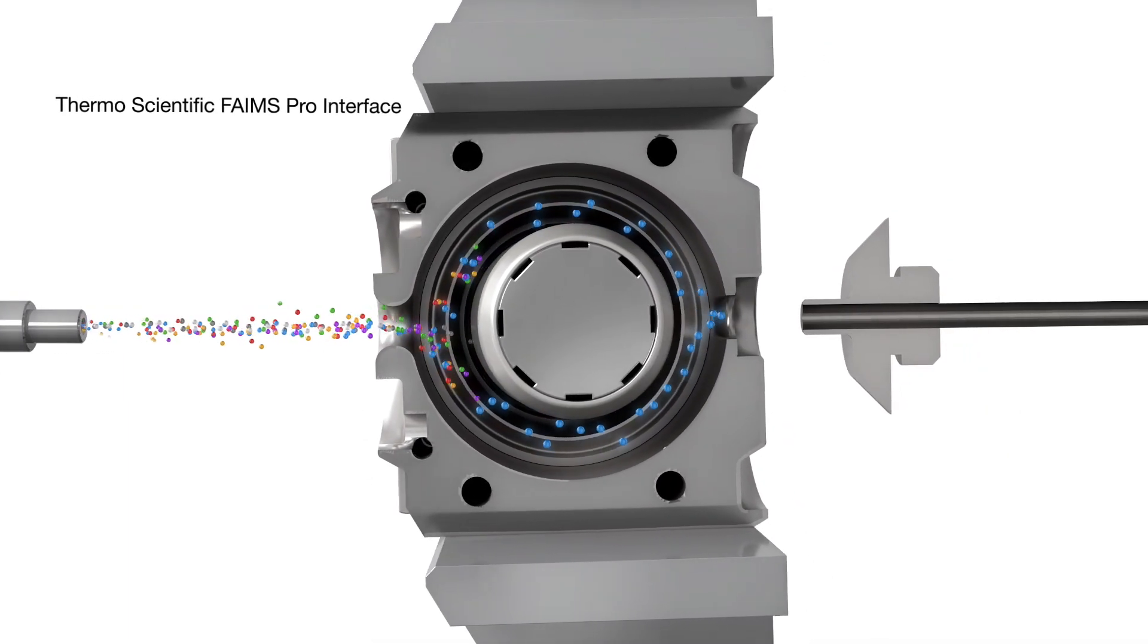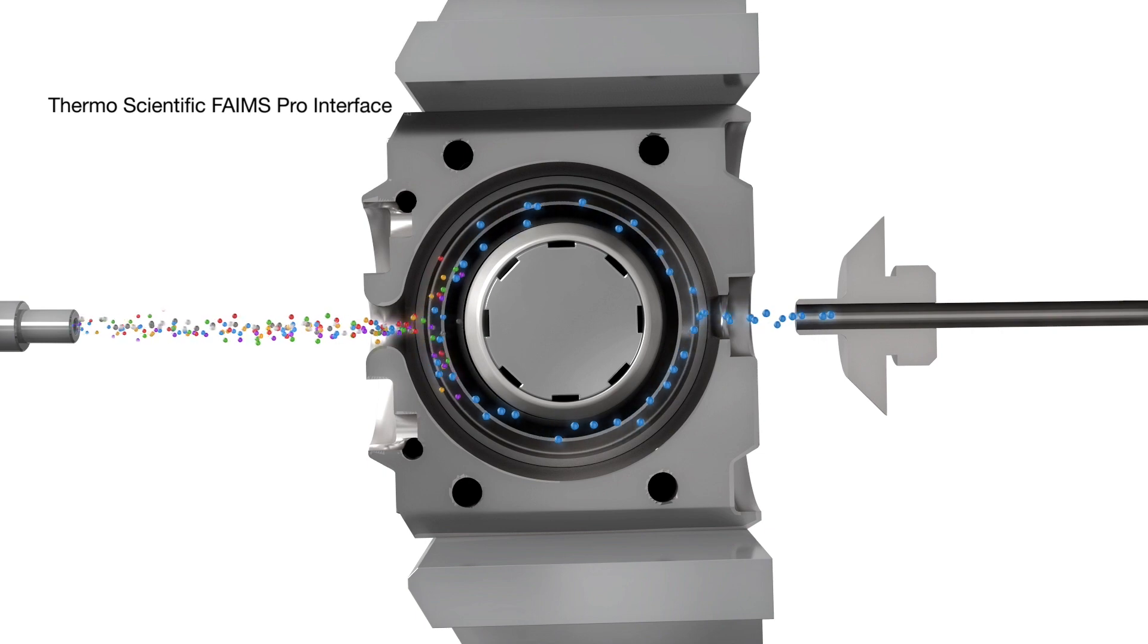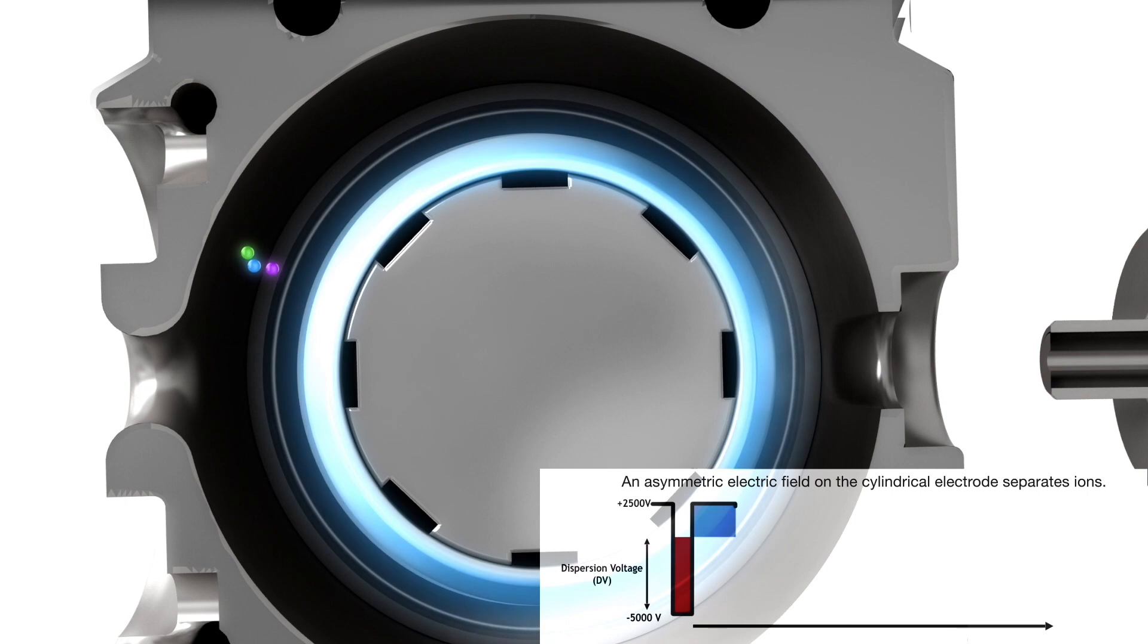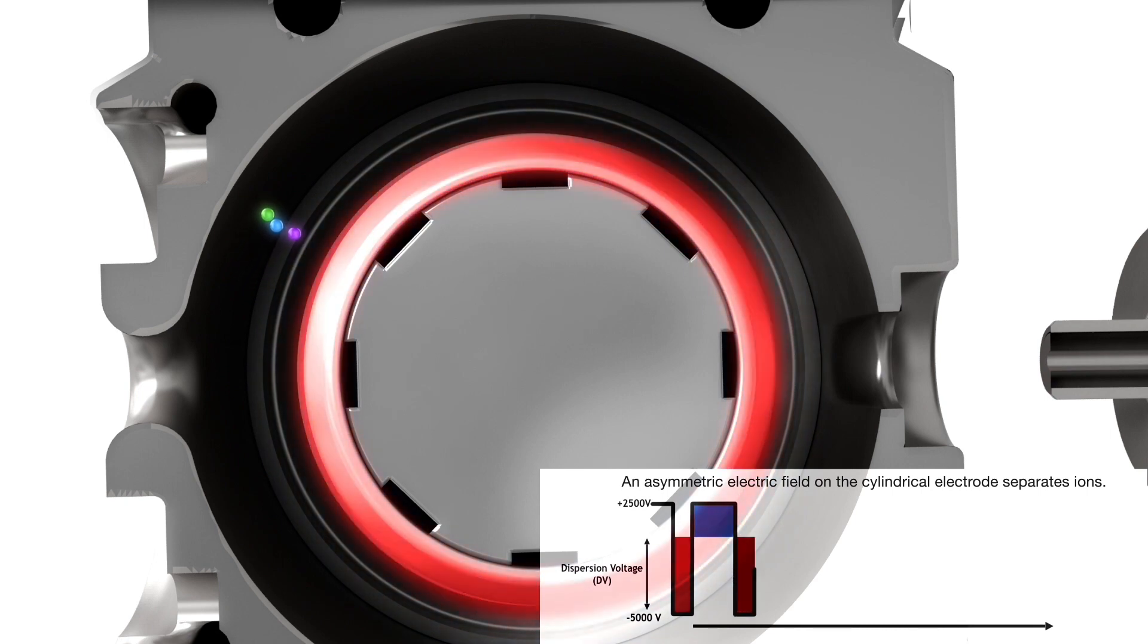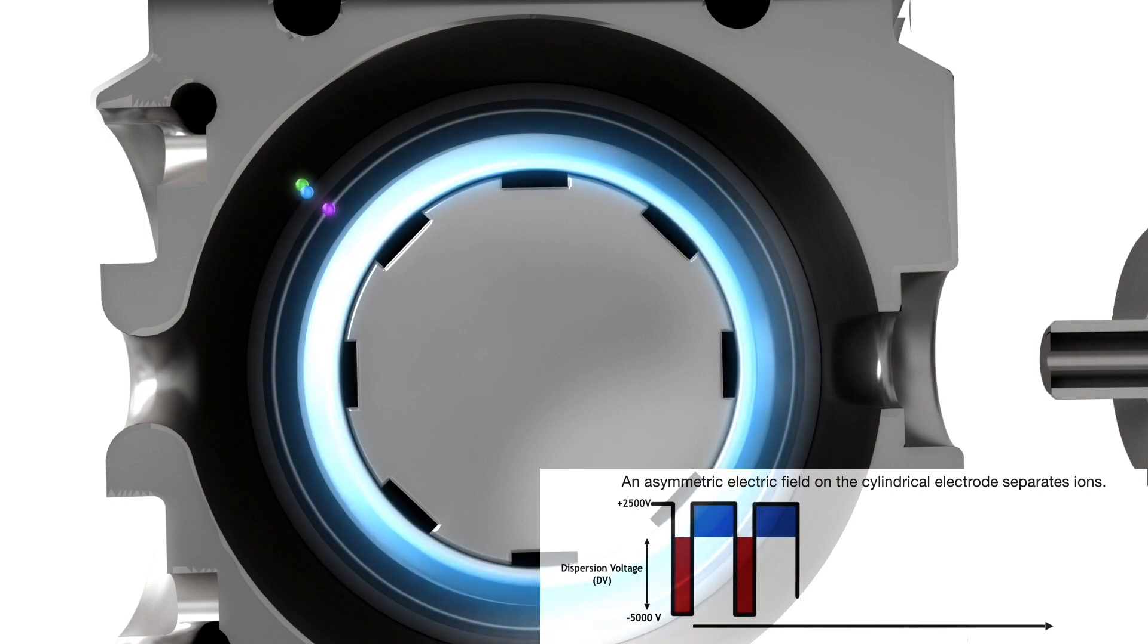The FAIMS Pro interface is placed between the electrospray emitter and the mass spectrometer entrance. An asymmetric electric field, the dispersion voltage, is applied to the inner cylindrical electrode to separate ions as they traverse the interface in a flow of nitrogen.